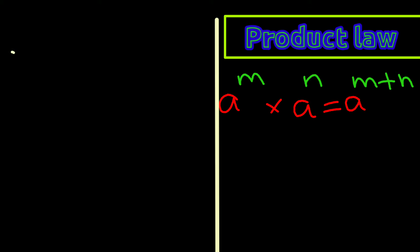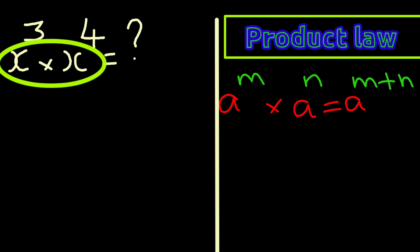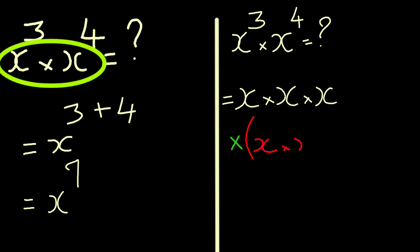Let's go over some basic properties. What is x to the power 3 times x to the power 4? Whenever we multiply the common base, we need to add the powers. We have the common base as x, so we add the powers: x to the power 3 plus 4, equal to x to the power 7. We can also verify this by writing x to the power 3 as x times x times x, multiplied by x to the power 4 as x times x times x times x, giving x to the power 7.